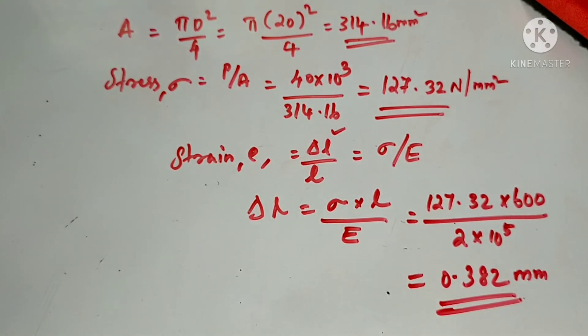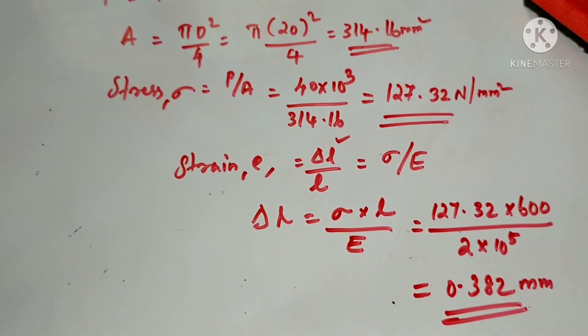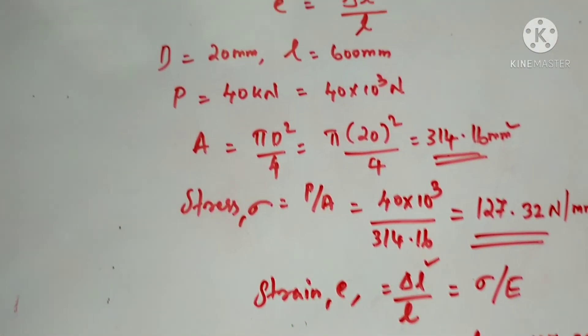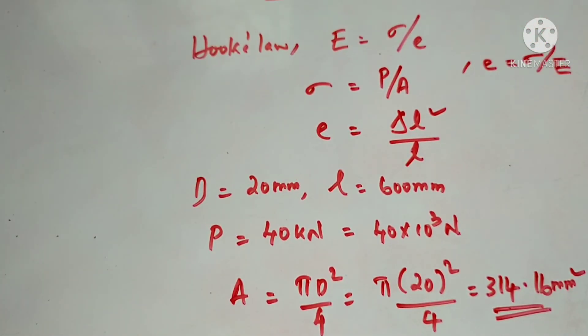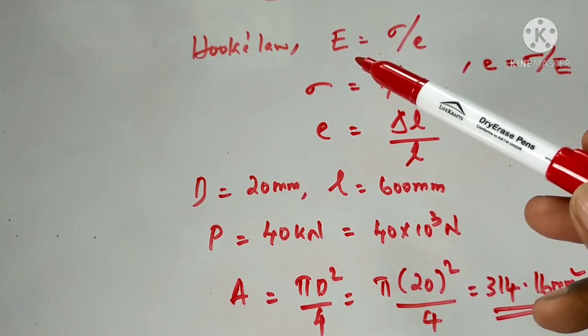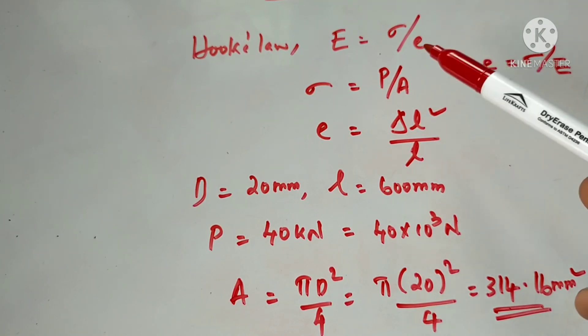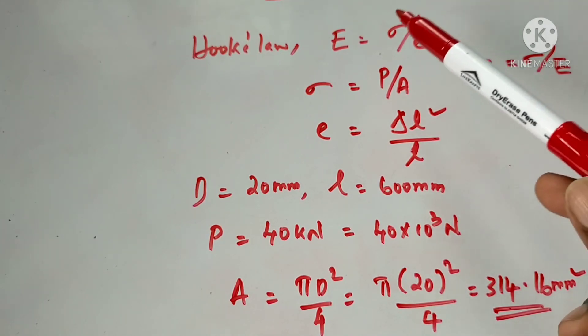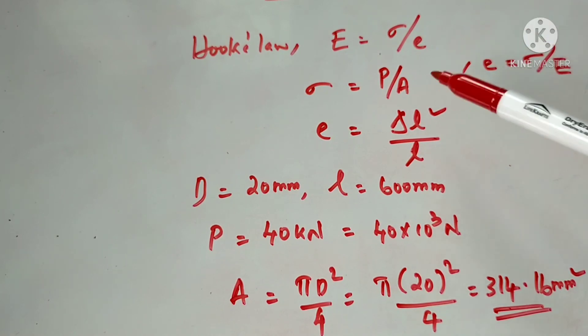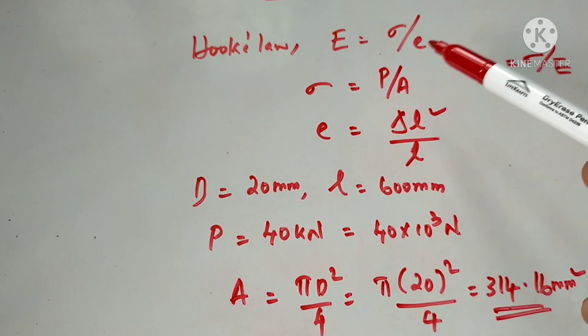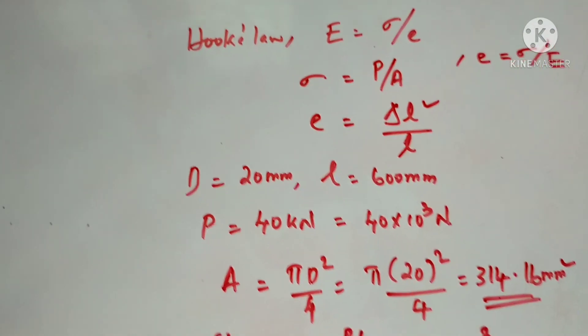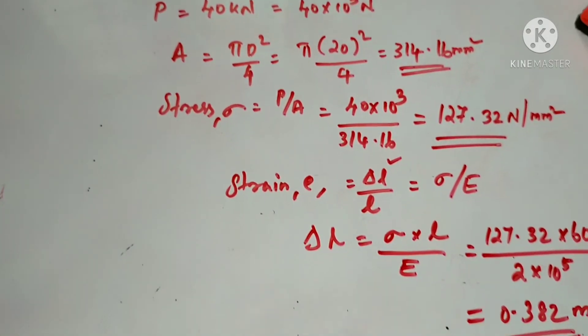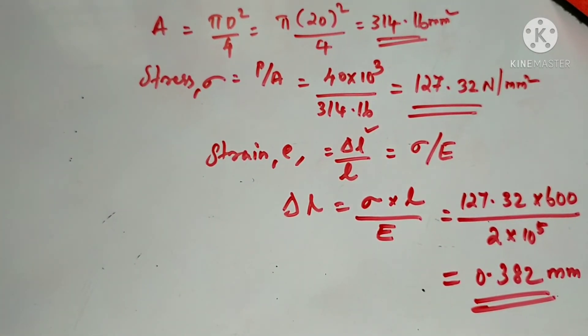That's the answer for the extension. This shows a simple worked example using Hooke's Law. Within the elastic limit, E equals sigma by e. In this case, small e is strain and sigma is stress. In the equation, the value for extension, elongation, change in length, or deformation is 0.382 mm.